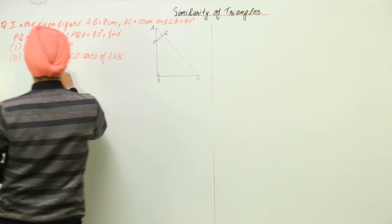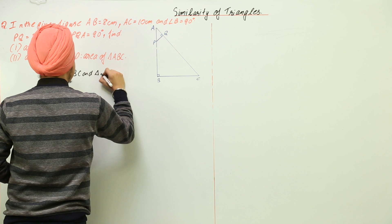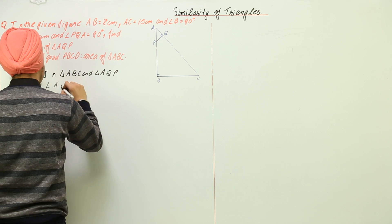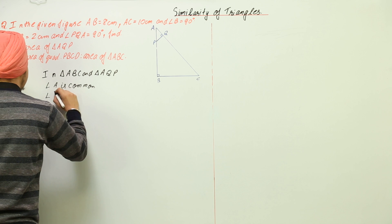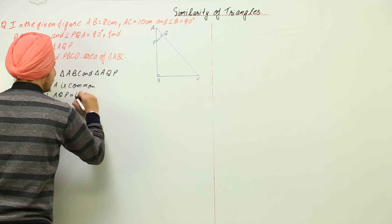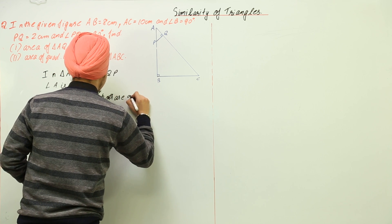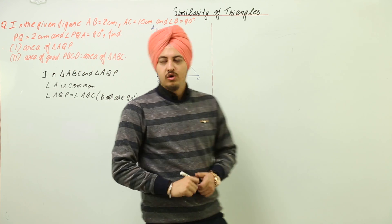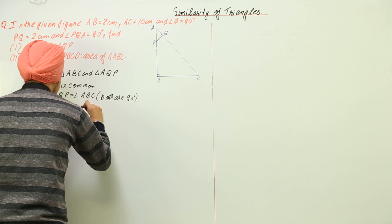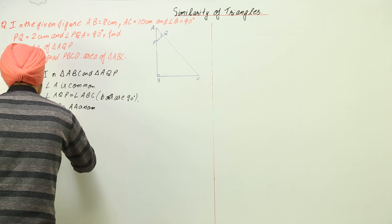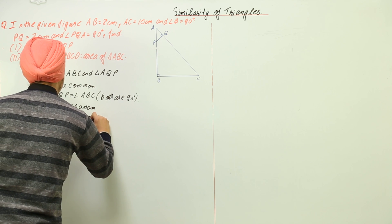In triangles ABC and AQP, angle A is common, and angle AQP is equal to angle ABC — both are 90 degrees, as given. So by the AA axiom of similarity, triangle ABC is similar to triangle AQP.